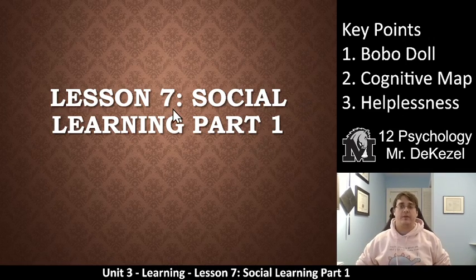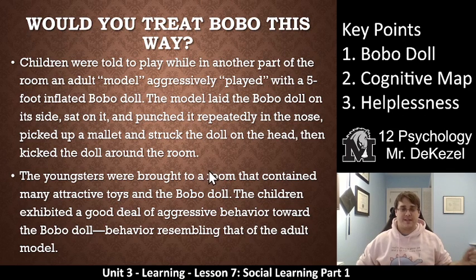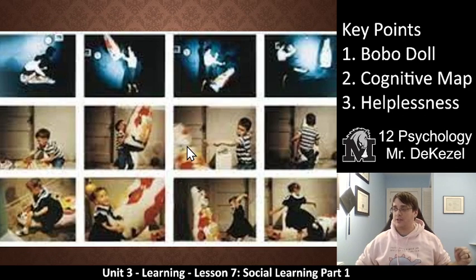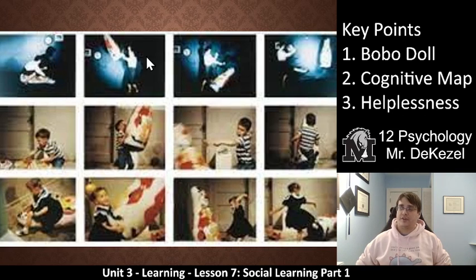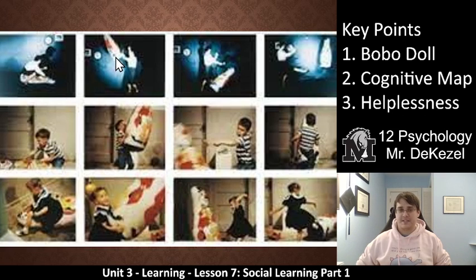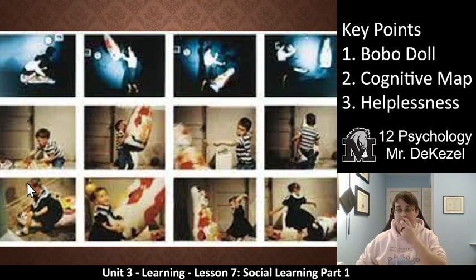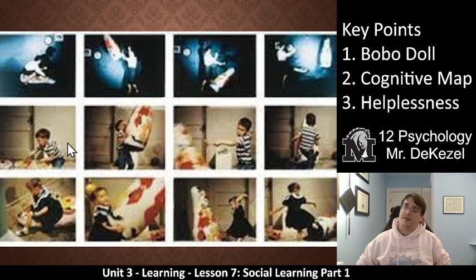Let's get going with the Bobo doll. I want to flip to the next slide and show you this picture. In this top row — I know it's hard to see, but it's old, it's from like the 60s — we have an adult throwing, punching, and knocking over a doll. We call this the Bobo doll. In these pictures, we see a boy and a girl doing the same things: laying the doll down, picking it up and throwing it, punching it, kicking it — all of the same things the adult is doing.